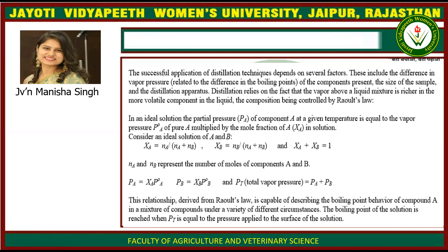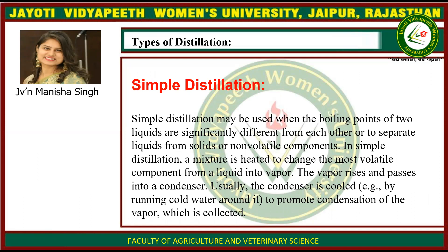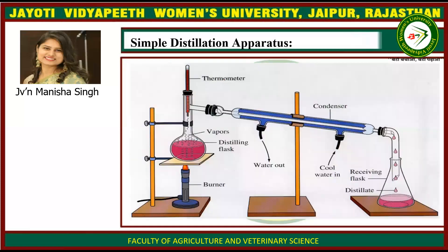Types of distillation: simple distillation and fractional distillation. Simple distillation may be used when the boiling points of the two liquids differ significantly from each other, or to separate liquids from solids or non-volatile components. In simple distillation, a mixture is heated to change the most volatile component from liquid into vapor. The vapor rises and passes into the condenser, which is cooled by running cold water around it to promote condensation, and the liquid is collected. In the apparatus shown, a mixture of compounds A and B is heated — vapors of the more volatile component A are cooled by the condenser and collected as distillate in a receiving flask.